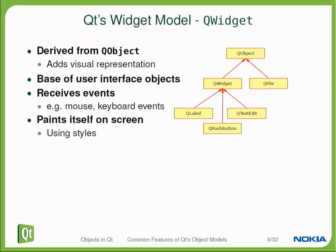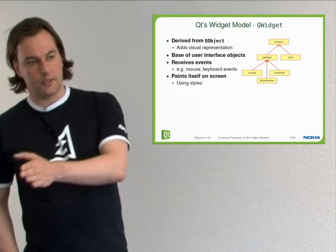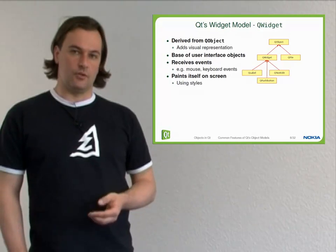The QObject tree, which was responsible for memory management, also serves another purpose for widgets: it defines the nesting on the screen. A parent widget that has a child that is a push button, for example, will show that push button within its window. This can be nested again, of course, like a hierarchical structure, and that's how you create more complex user interfaces — by combining existing widgets into an object tree.